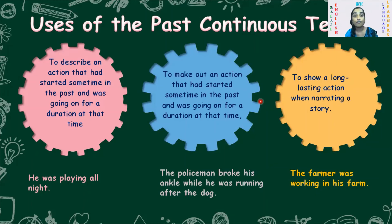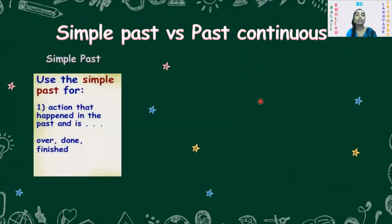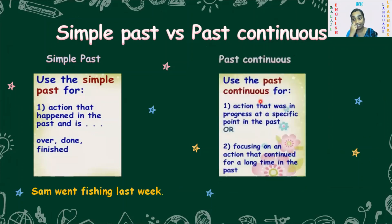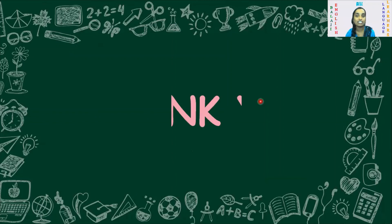Now let's look at the difference between simple past and past continuous. Simple past is used when the action was completed, finished, and is over. Example: 'Sam went fishing last week' — that is finished and completed. Past continuous is used for an action which was in progress, going on continuously at a particular point in the past or for a longer duration in the past. Example: 'The kids were studying last night at 9 pm.'